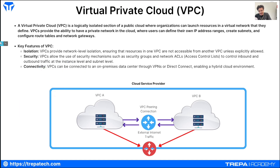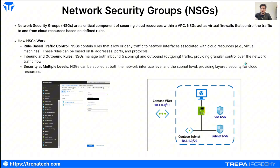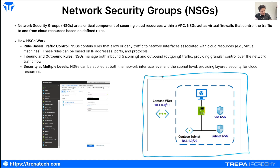Network security groups are a key component of securing a VPC. They act as virtual firewalls that control traffic to and from cloud resources based on defined rules within a VPC. This Microsoft diagram shows how NSGs can be applied to a whole VNet or subnet at different levels. At a high level, they filter traffic — just like a traditional firewall would.